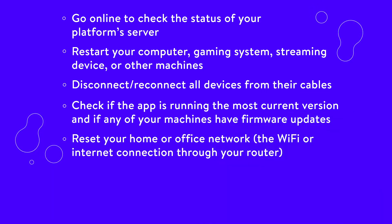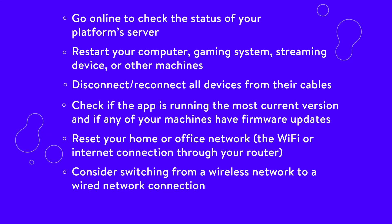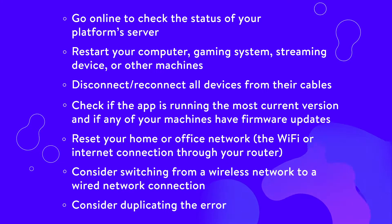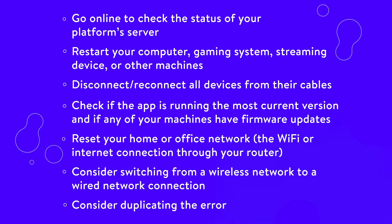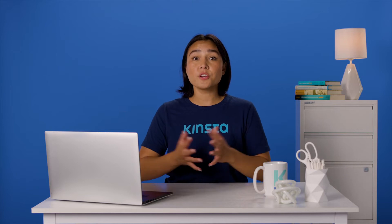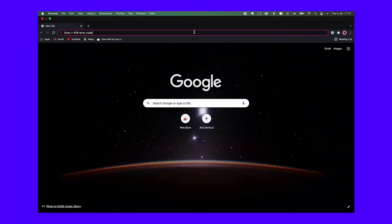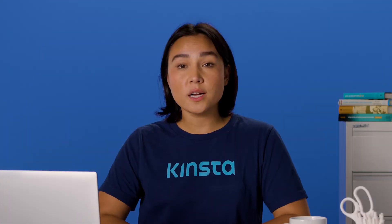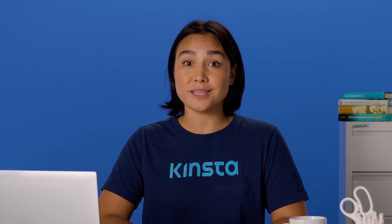Reset your home or office network — the Wi-Fi or internet connection through your router. Consider switching from a wireless network to a wired network connection if you're still having trouble. And although this isn't always a possibility, consider duplicating the error with a completely different machine, making sure that the device is on the same network. If you can't replicate the error, look into your network and the original machine. If all else fails, go to your search engine and type in the name of your platform along with plus 406 error code for platform-specific troubleshooting advice. That often reveals forums and support documentation to guide you through the process.